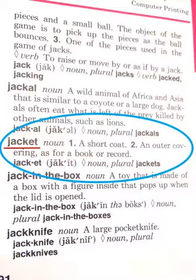Next to the word we get what's called the part of speech. We haven't really talked about that yet, but part of speech means the word might be a noun — a person, place, or thing — or it might be a verb, like an action. If you look up a little bit, you'll see that the word at the top of the page is a verb, so we get the part of speech.